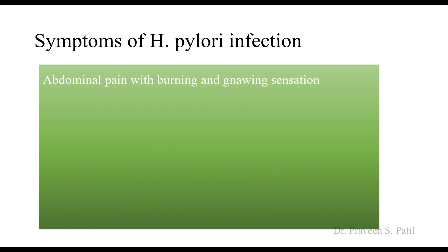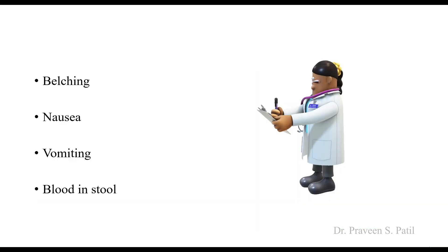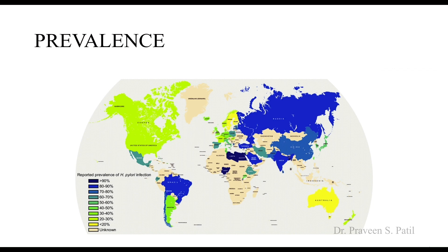The symptoms of H. pylori infections are abdominal pain with burning and gnawing sensation, loss of appetite, weight loss, heartburn, indigestion, belching, nausea, vomiting, and blood in the stool — a blackish discoloration — since the bleeding is from the upper GI tract, it is not fresh blood.